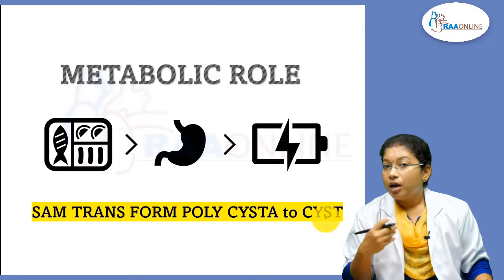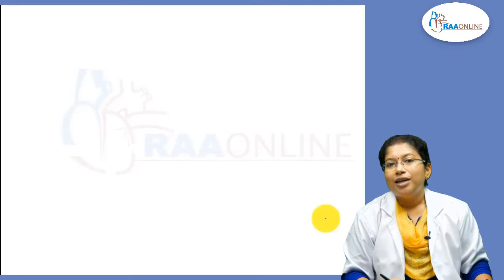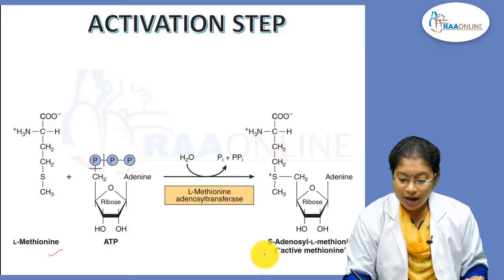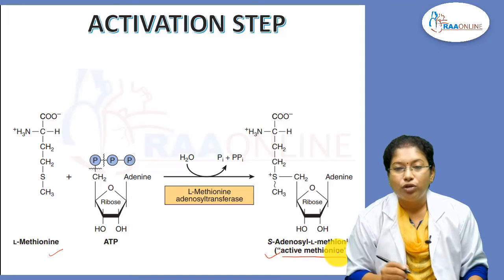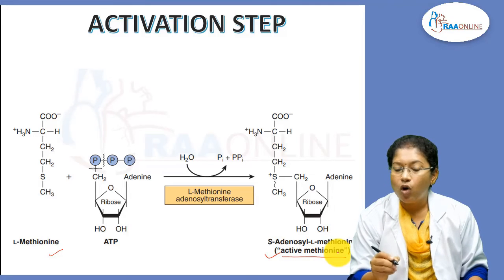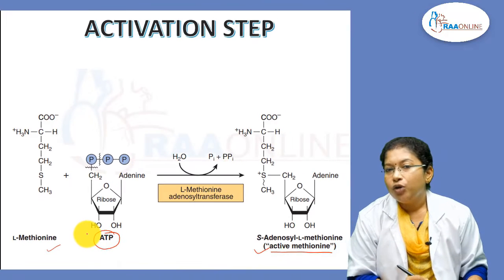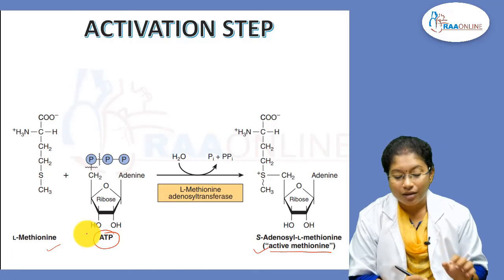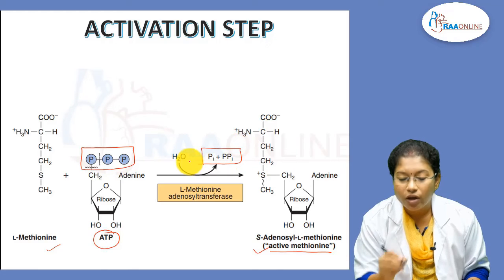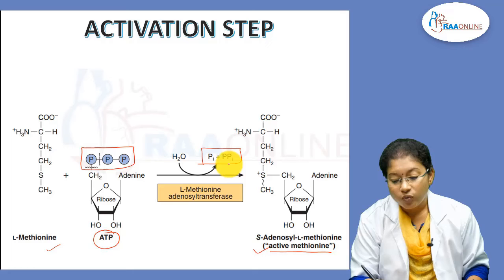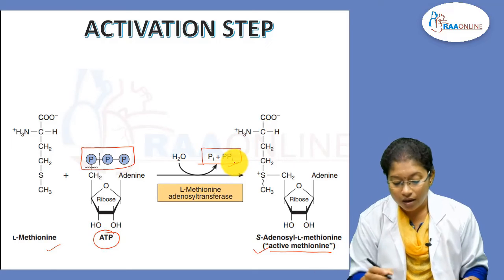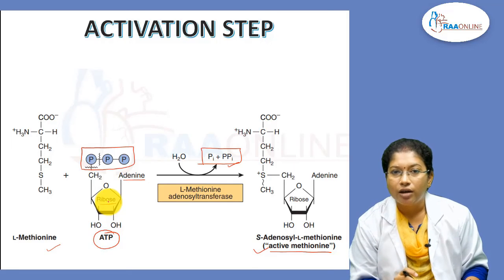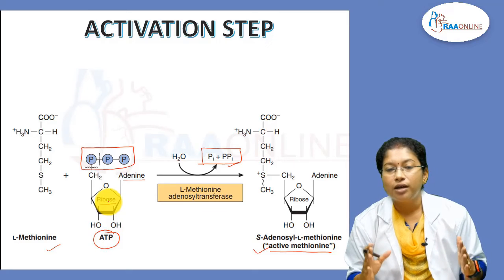First is how S-adenosyl methionine is produced from methionine — this is the activation step. L-methionine becomes S-adenosyl-L-methionine, the active methionine. The activation step always involves ATP. The beauty of this step is that unlike other activation steps where phosphate is incorporated into the substrate, here all three phosphates are removed as inorganic phosphate and pyrophosphate. The compound remaining is adenine and ribose — that is, adenosyl — which attaches to methionine to give you S-adenosyl methionine.